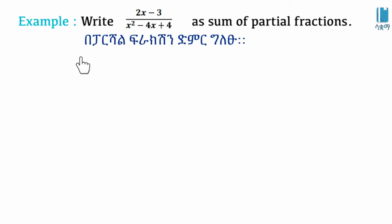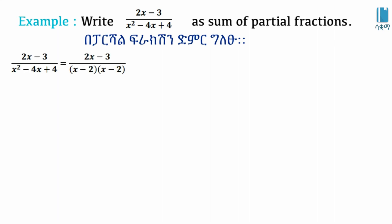Now consider the expression 2x minus 3 over x squared minus 4x plus 4. We need to find the partial fraction decomposition. The first step is to factorize the denominator. Factorizing gives us x minus 2 times x minus 2.